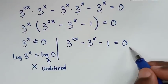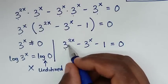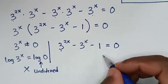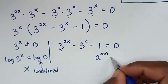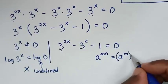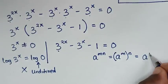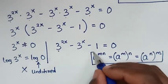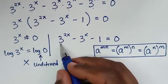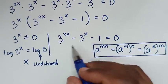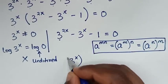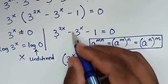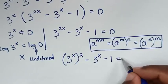To solve the second solution, we rewrite 3 power of 2x to have the common factor 3 power of x. We apply the exponential rule a power of mn equals (a power of m) raised to the power of n. So 3 power of 2x becomes (3 power of x) squared. The equation becomes (3 power of x) squared minus 3 power of x minus 1 equals 0.